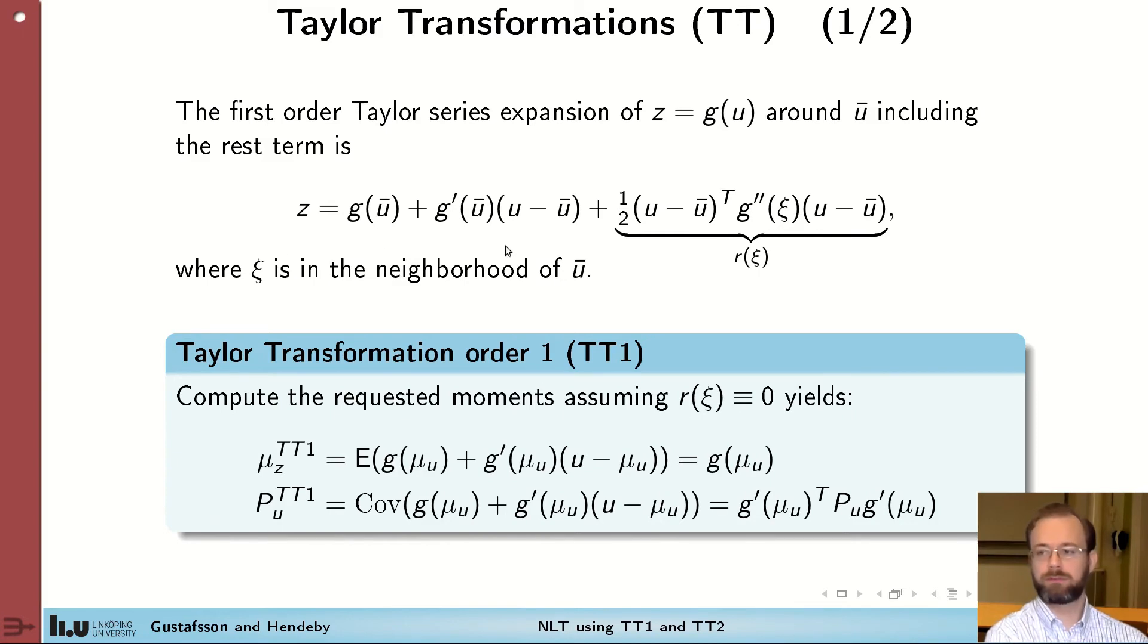If you now use the linear part of this and compute the mean and covariance, we get the Taylor transformation of order 1, TT1.